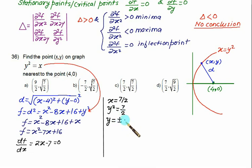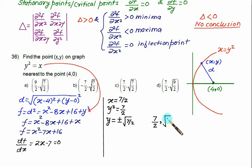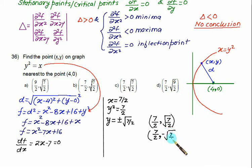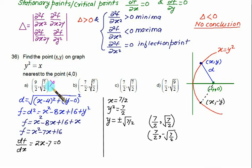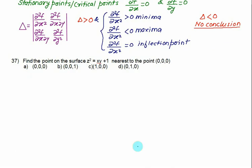Therefore y = ±√(7/2). Using this, we can form two points: (7/2, √(7/2)) and (7/2, −√(7/2)). These are mirror points of each other. So choice C is correct.